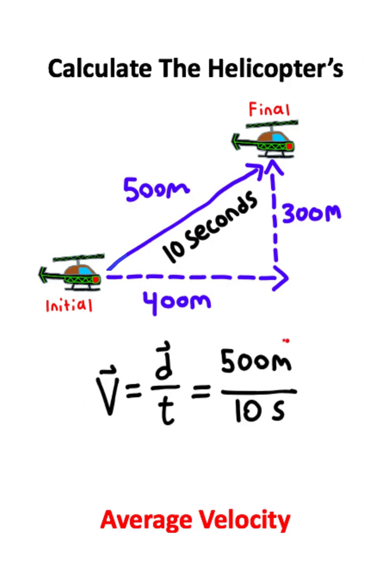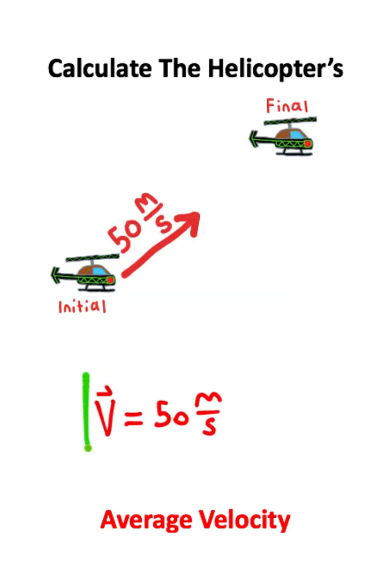500 meters divided by 10 seconds gives us an average velocity of 50 meters per second. This is the average velocity of the helicopter.